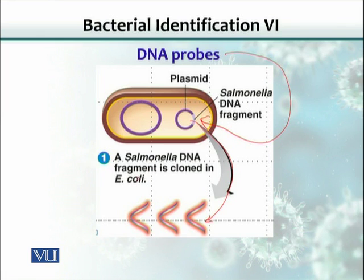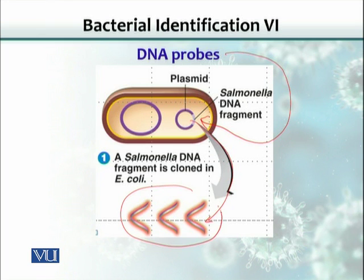This is a Salmonella DNA fragment which was cloned in E. coli. As this E. coli replicates, the plasmid would also replicate — and a plasmid can even replicate without replicating the cell. At the end, the resultant amplification of this probe gives us lots of DNA that we can label with a radioisotope, for example, and that could be used for identification of Salmonella from a sample.